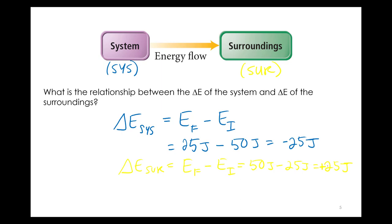So what's the relationship between these? Well, the system is negative 25 joules. What's that mean? It means it lost 25 joules. That's what it means. So the system lost 25 joules.